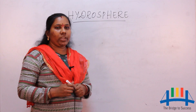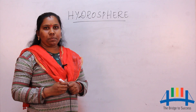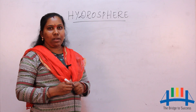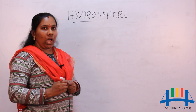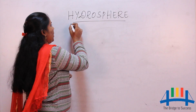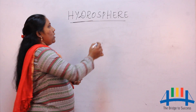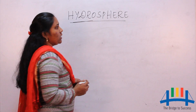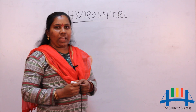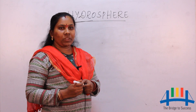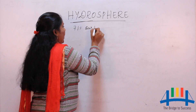Hello friends, today's topic is hydrosphere. As you have learned earlier, Earth has four spheres: lithosphere, hydrosphere, atmosphere, and biosphere. Today we are going to learn about hydrosphere. Hydrosphere is a word derived from the Greek word 'hydro', meaning water, and 'sphere', derived from the Greek word 'speria', meaning sphere or a ball.